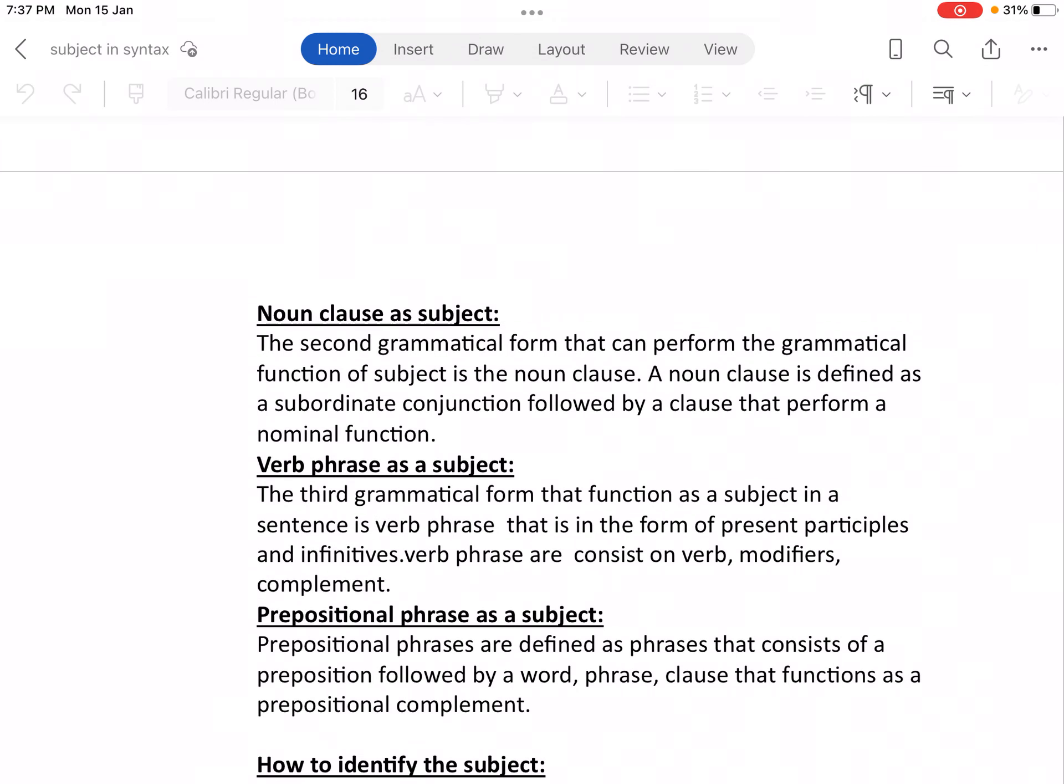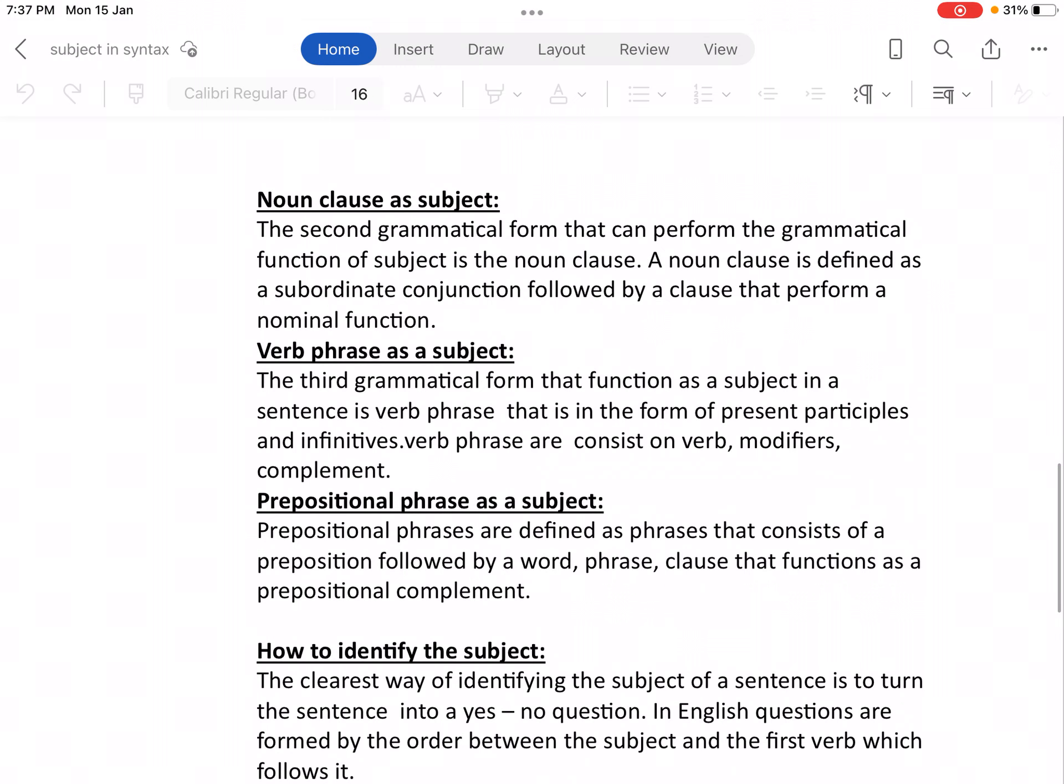Noun clause as a subject. The second grammatical form that can perform the grammatical function of subject is the noun clause. Noun clause is defined as a subordinate conjunction followed by a clause that performs a nominal function. Nominal function means nouns related, the functions of nouns. These subordinate conjunctions join two clauses. The clause works as a noun.